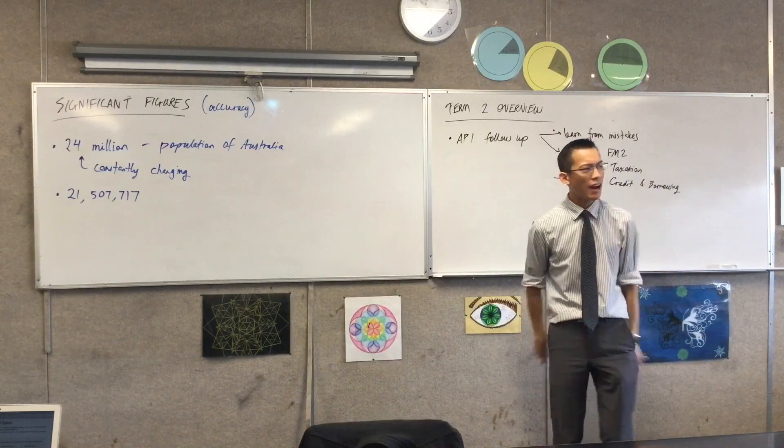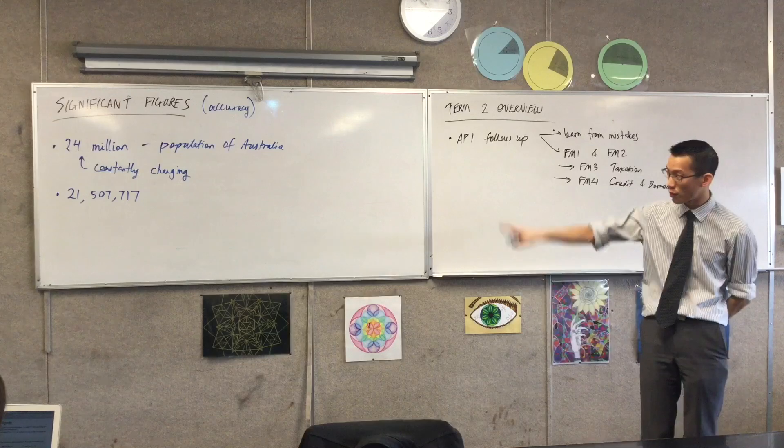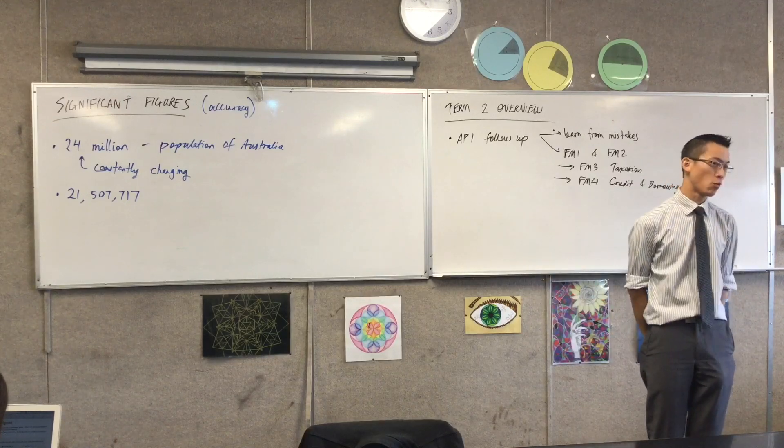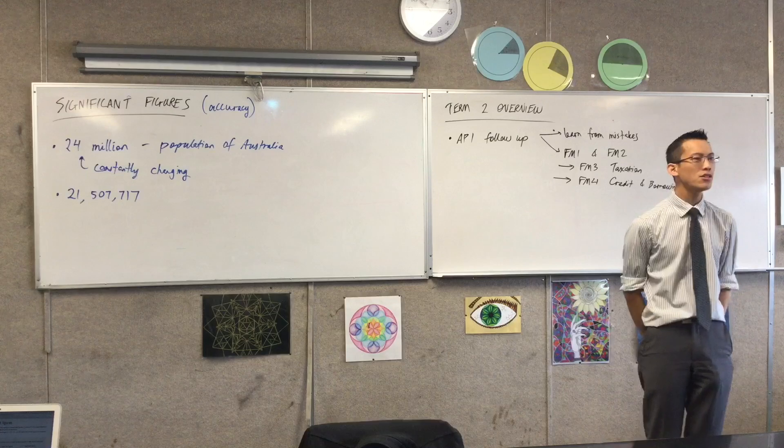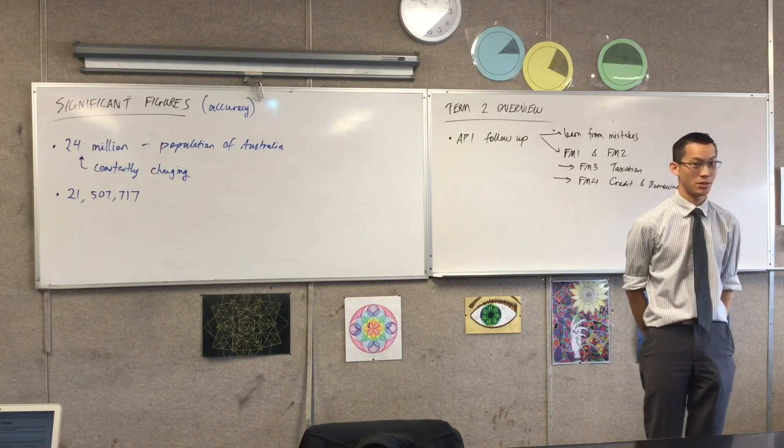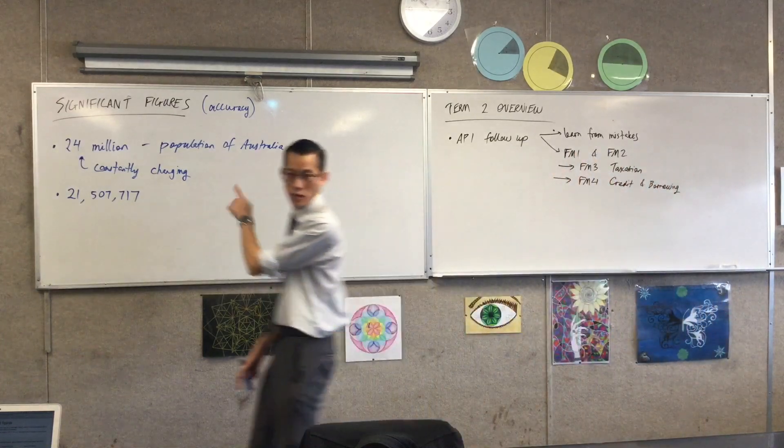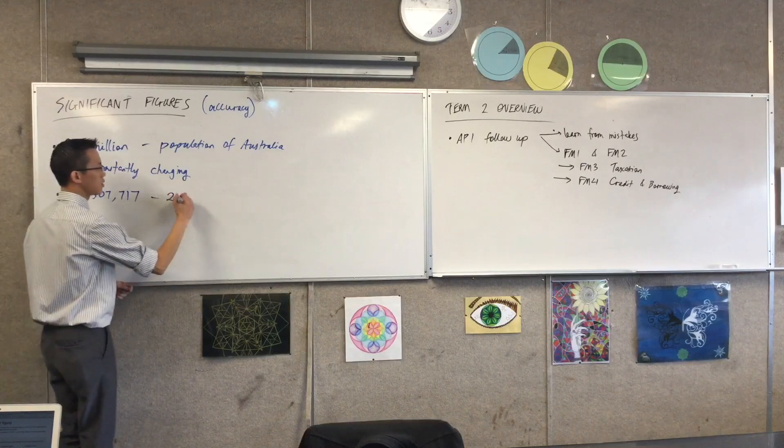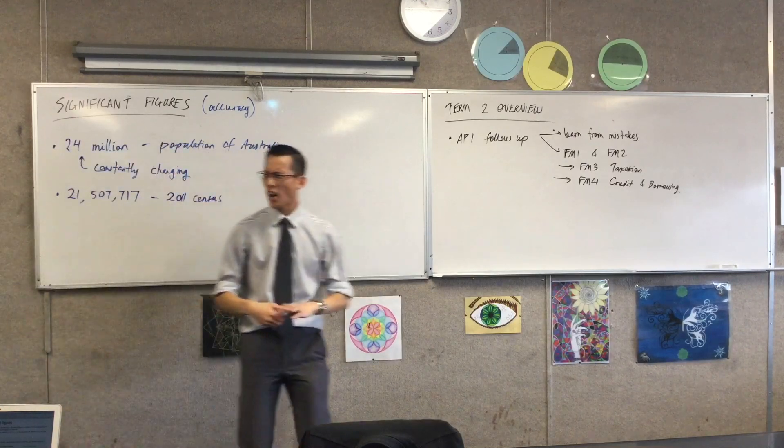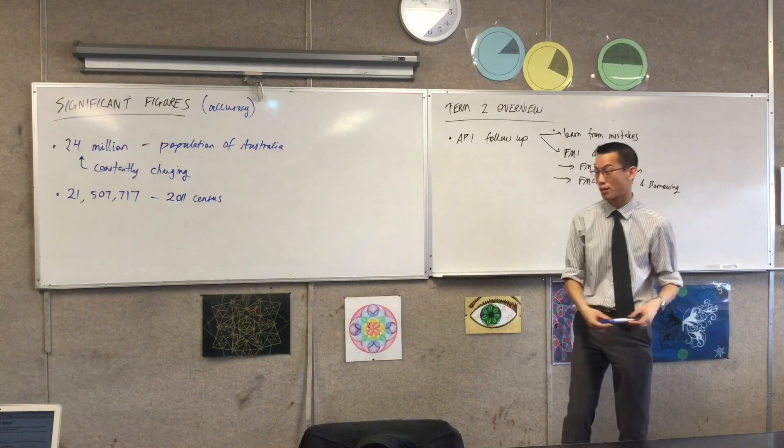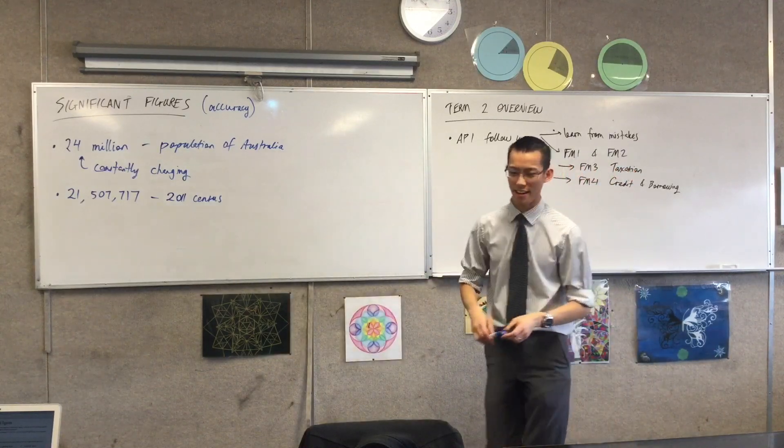But, secondly, how do we arrive at this number? For example, that second number there, was an exact number for the population of Australia. How do you think people found that number? Yeah, we did the census. In fact, the reason this number is smaller is because this was the 2011 census. When's the next? We should look up, we're going to look at some of the census data in another topic.